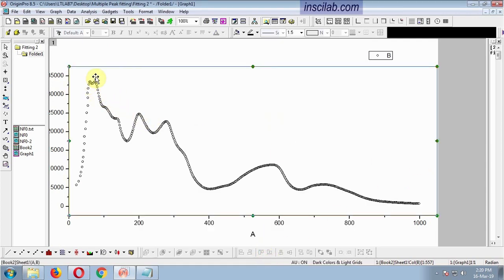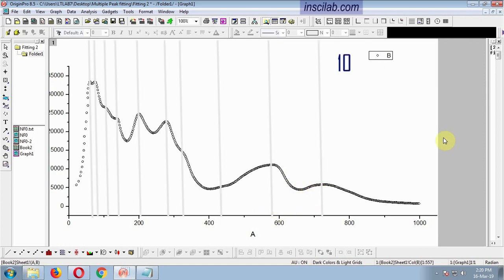Now, inspect the spectrum. Count the possible minimum number of peaks. This quick inspection shows that the number of peaks cannot be less than 10.